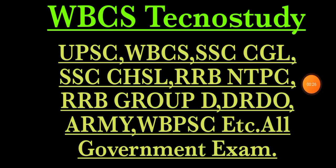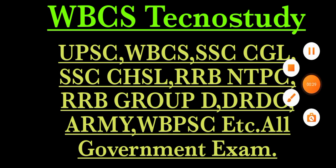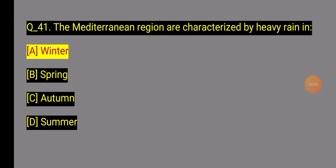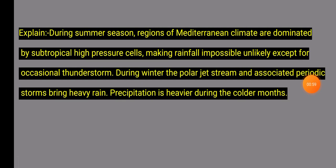Question 41: The reason for the Mediterranean region's character is heavy rain. Option A: The Mediterranean region's character is defined by heavy rain in winter.